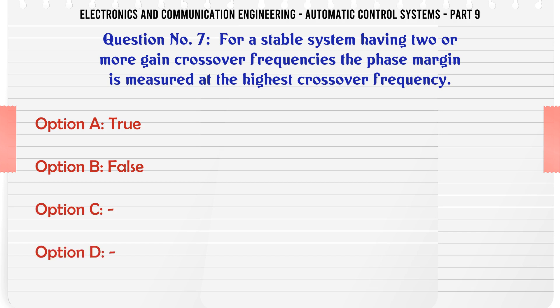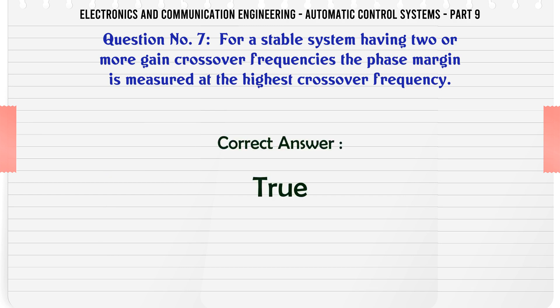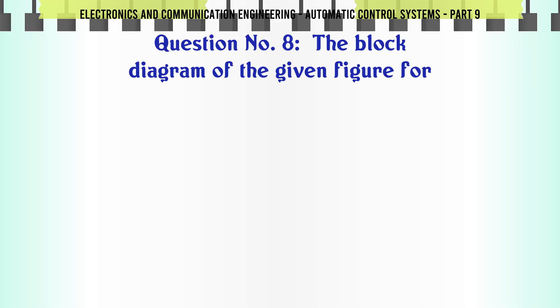For a stable system having two or more gain crossover frequencies, the phase margin is measured at the highest crossover frequency. A. True, B. False. The correct answer is: True.